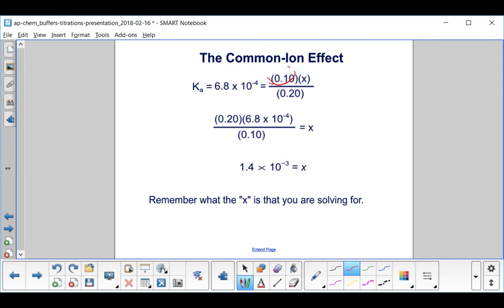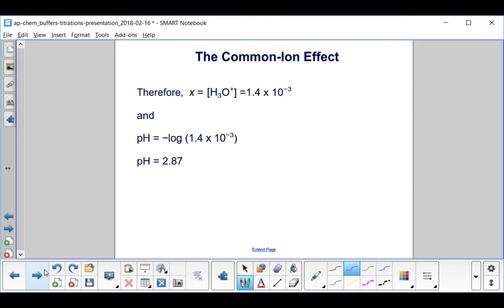We solve for X and get 1.4 times 10 to the minus 3. What is this X we're solving for? That X is the H3O plus ion concentration. We can solve for the pH. pH is the minus log of that concentration, and we get a pH of 2.87.